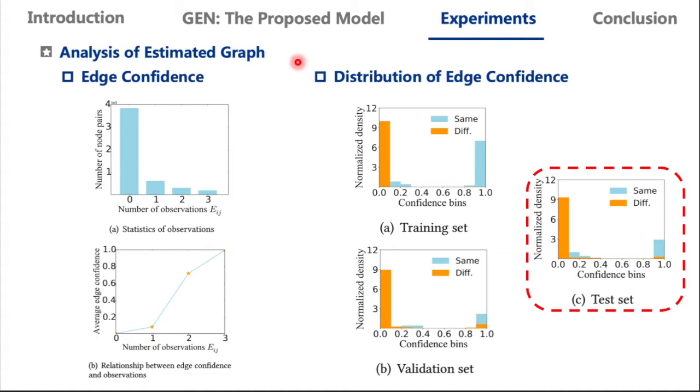Then recall that the estimated adjacency matrix Q represents our confidence in the existence of that edge. We present the relationship between edge confidence and the number of observations. We find that most node pairs are in the zero observation bar, since the graph is sparse and a large majority of node pairs never meet. From the relationship between the number of observations and average edge confidence, it can be found that an edge observed only zero or one time implies a low confidence, but there is a relatively sharp transition between one and two. To show the distribution of edge confidence, we divide the edges into two groups: edges between nodes of the same communities and different communities. We observe that the confidence of edges between same communities is concentrated on the last bin.